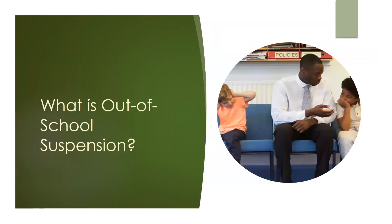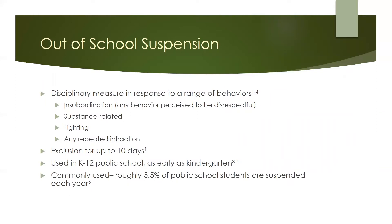So first, what is out-of-school suspension? Out-of-school suspension is an exclusionary disciplinary measure used in schools. It can be a response to a range of different behaviors. One of the most common reasons given for suspending a child out-of-school is insubordination—behavior that is seen as disrespectful or not following directions. Students report being suspended for insubordination when they have gone to the bathroom without being given permission or putting their head down on their desk in a tired manner.